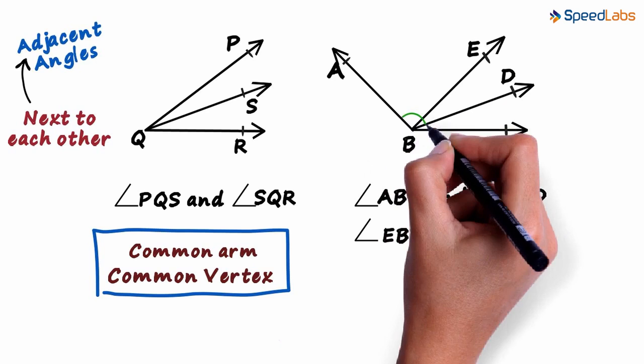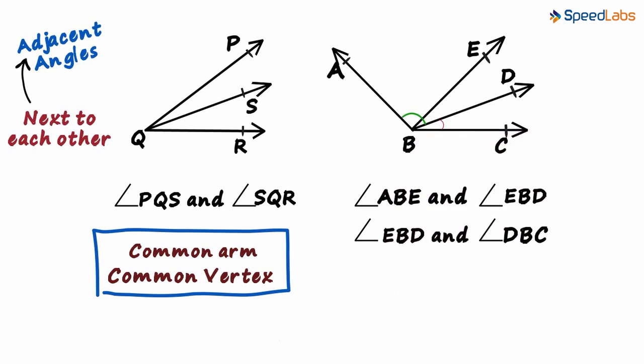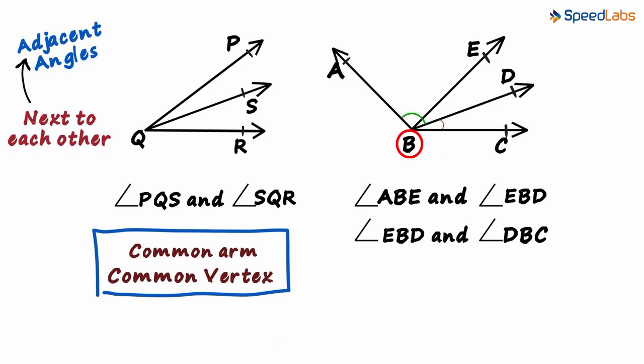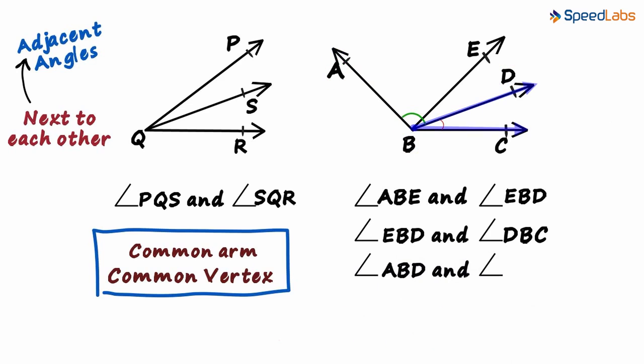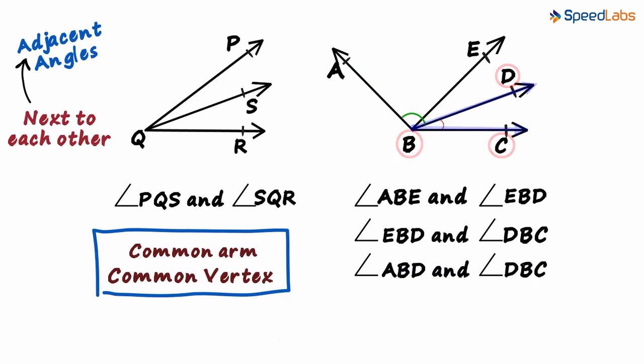What about this green angle and this red angle? Of course they are adjacent. They have a common arm BD and a common vertex B. So angle ABD and angle DBC also form an adjacent pair of angles. Are there any other adjacent pairs left?